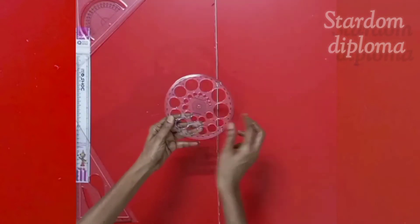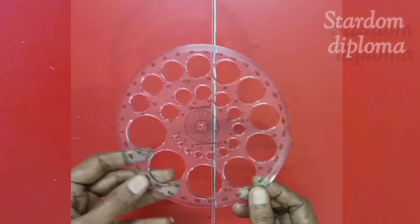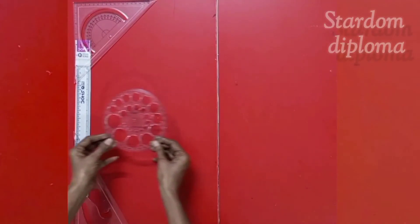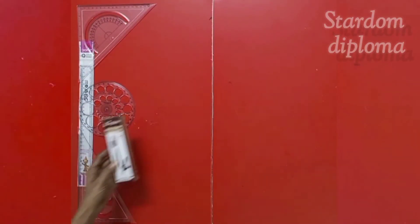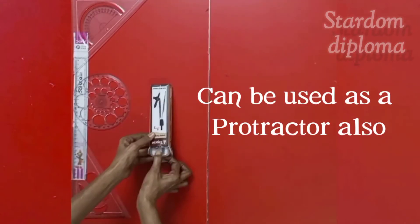Yes, and the last type of scale, which you are seeing, this is a circular scale. This scale is called as a pro scale. This pro scale contains different sizes of circles, that is circles of different radii. Not only for drawing different types of circles, we can use this pro scale as a protractor also.